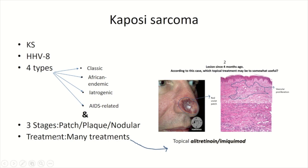The range of treatments for Kaposi sarcoma is wide, as the recurrence rate is high. Treatment decisions are based on the age of the patient, the number of lesions, the extent of organ involvement, and the patient's immune system. In rapidly progressive Kaposi sarcoma, especially with visceral involvement, systemic chemotherapy is indicated. However, cryotherapy, laser ablation, photodynamic therapy, topical alitretinoin, and topical imiquimod are all useful for superficial lesions, so topical alitretinoin and topical imiquimod could be the answer for this patient.